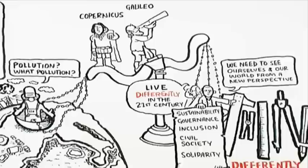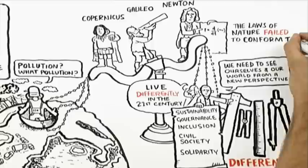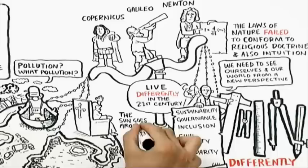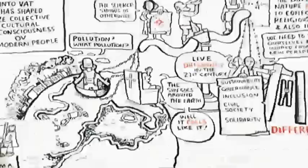Because Copernicus, Galileo, and Newton helped to lay the ground for the enlightenment by revealing that the laws of nature not only fail to conform to religious doctrine, but also they fail to conform to intuition. So the Pope might have said the sun went round the earth, it might have felt like the sun went round the earth, but science showed otherwise.